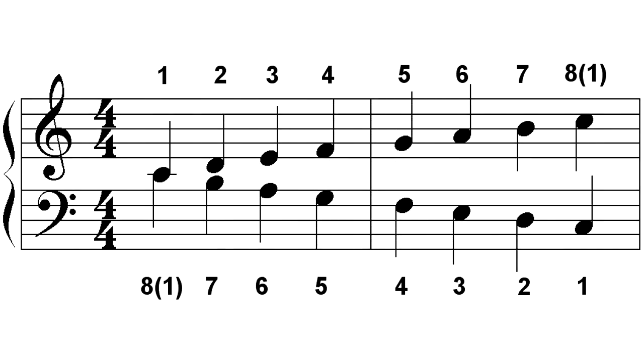The notes in a scale are numbered starting at 1, which is also called the root note. Here are the same C major scales as before, but showing note numbers instead of their letter names. Using numbers lets us describe the notes without regard to a specific musical key. For example, the third note in a scale determines whether the scale is major or minor, regardless of its key. The last note in the scale has the same letter name as the first and sounds at the same basic pitch, only one octave higher, so it can be referred to as either 8 or 1.